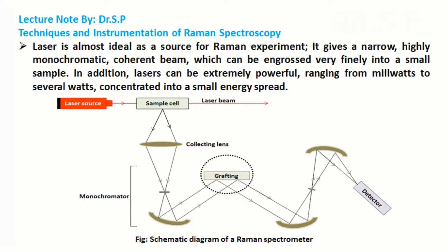In this tutorial we will discuss techniques and instrumentation of Raman spectroscopy. A laser is almost ideal as a source for a Raman experiment — it gives a narrow, highly monochromatic, coherent beam, which can be focused very finely into a small sample.